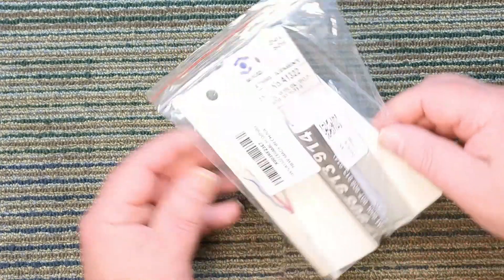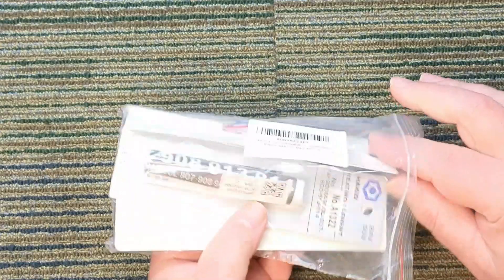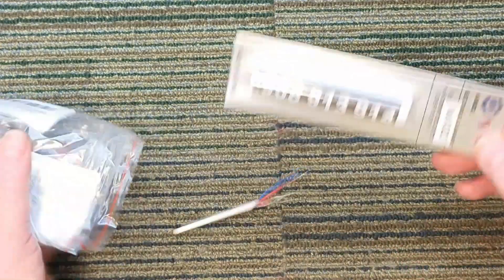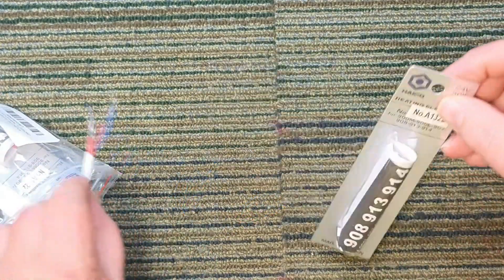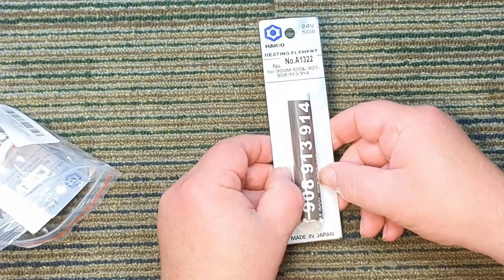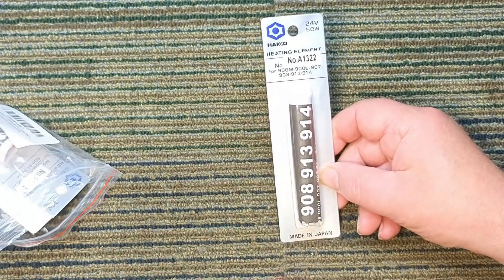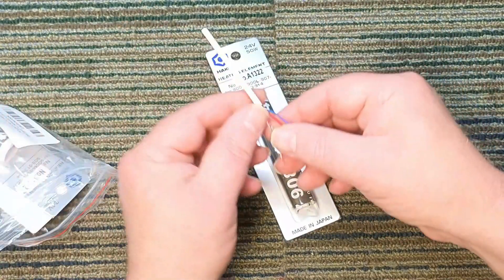So what you can do for a little over $2 a piece is buy these Hako replacement heating elements. 24 volt, 50 watts. This is what they look like, which is different than the original.